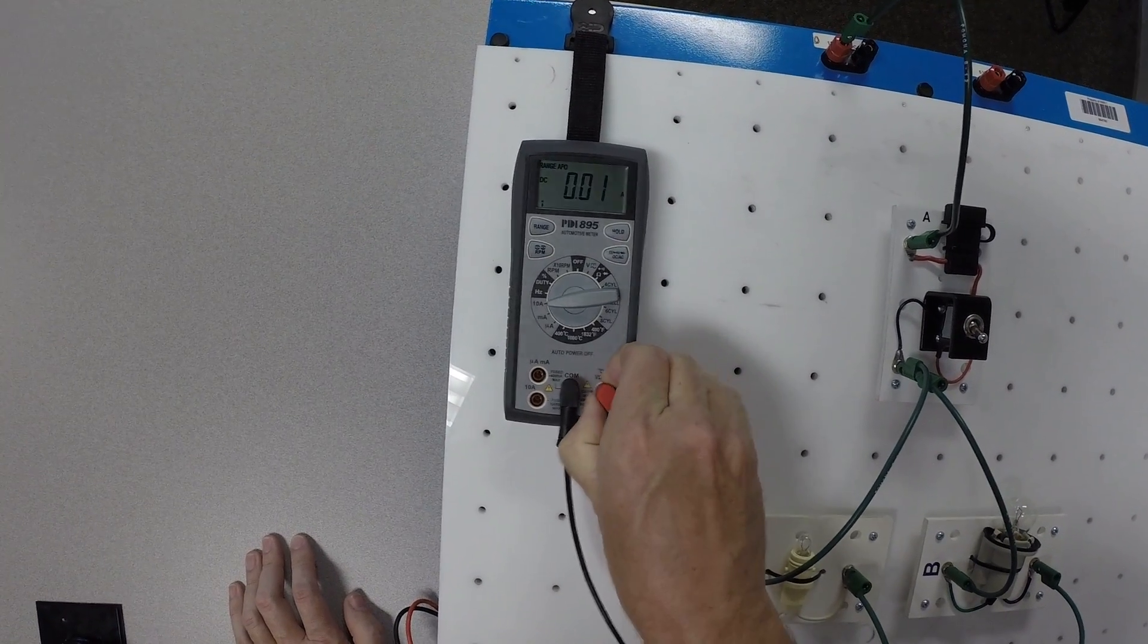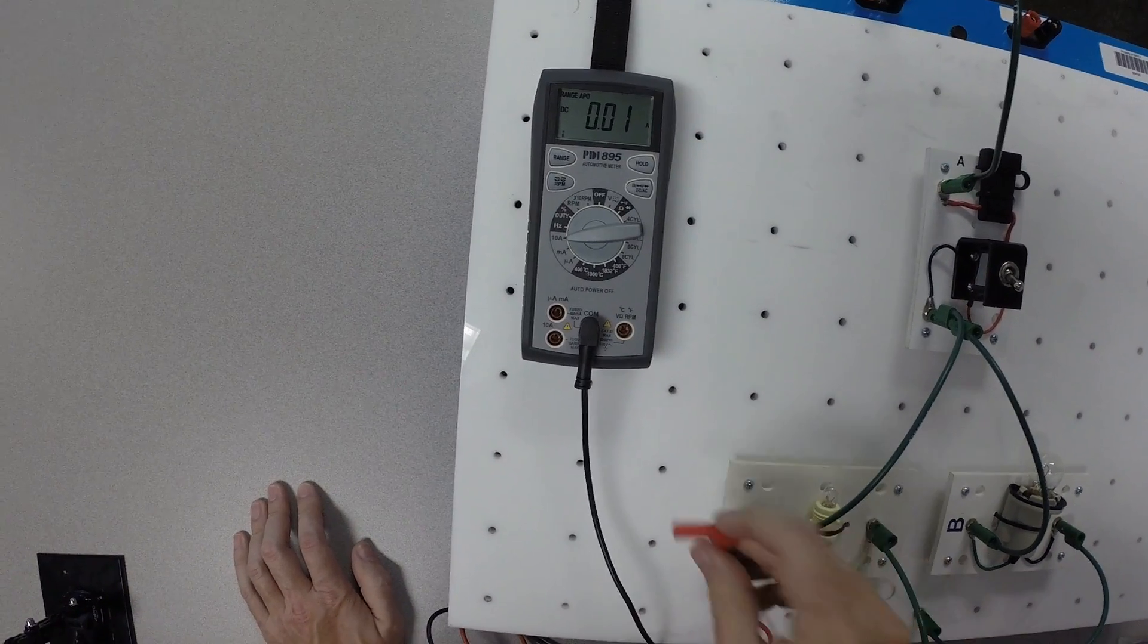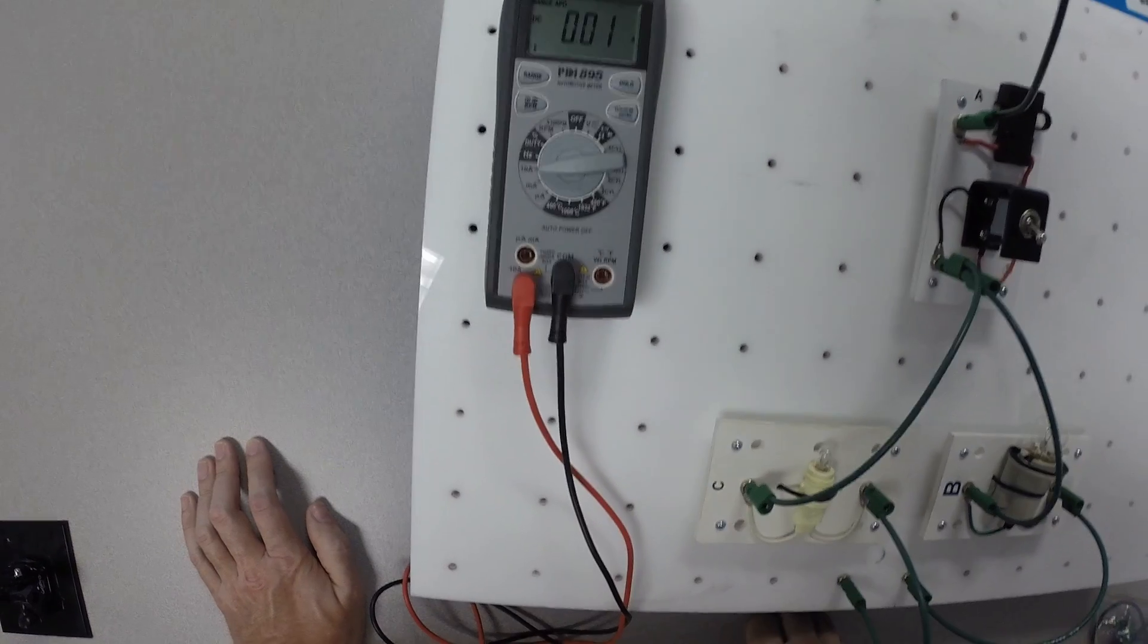We have to move our leads over, so we pull the red lead out of the hole for measuring voltage, and we're going to put it over here into the slot for 10 amps.